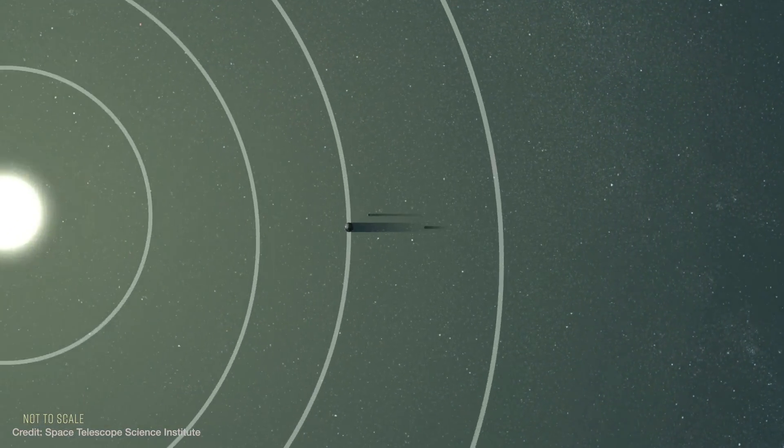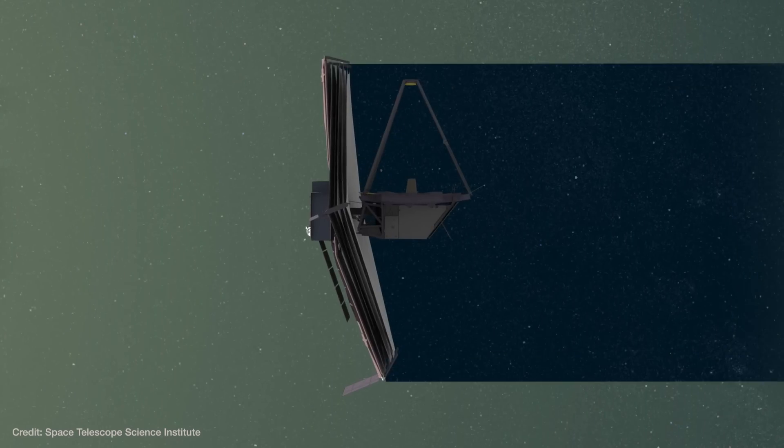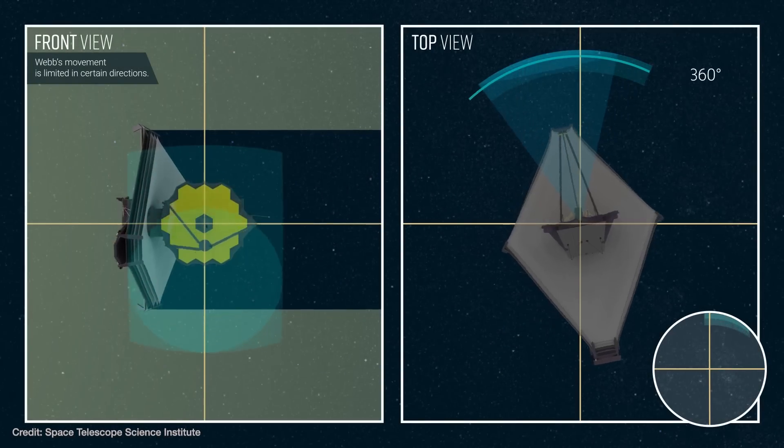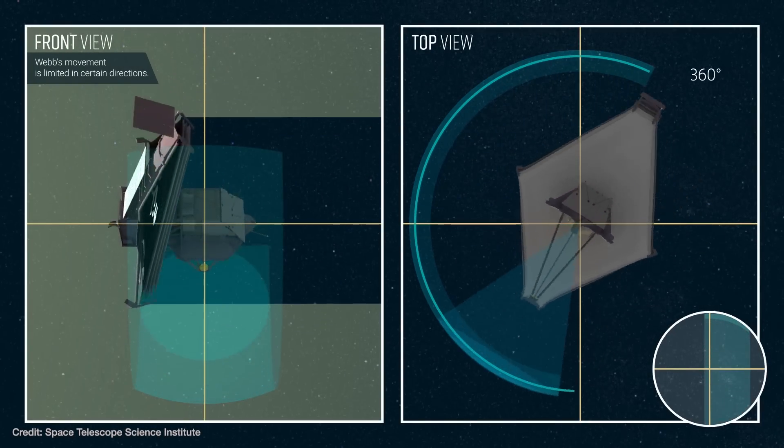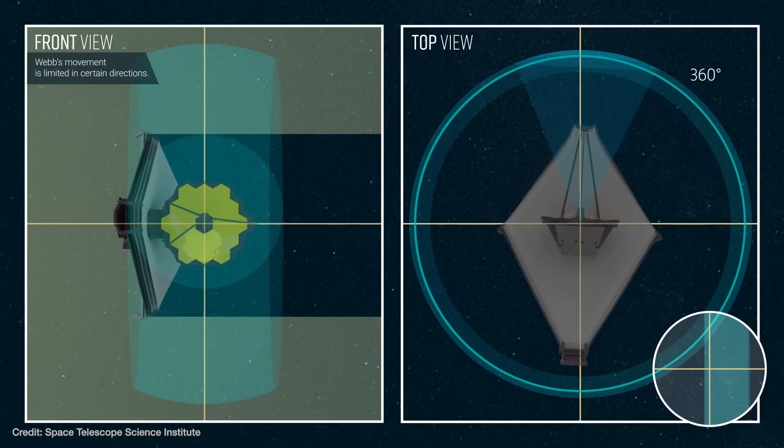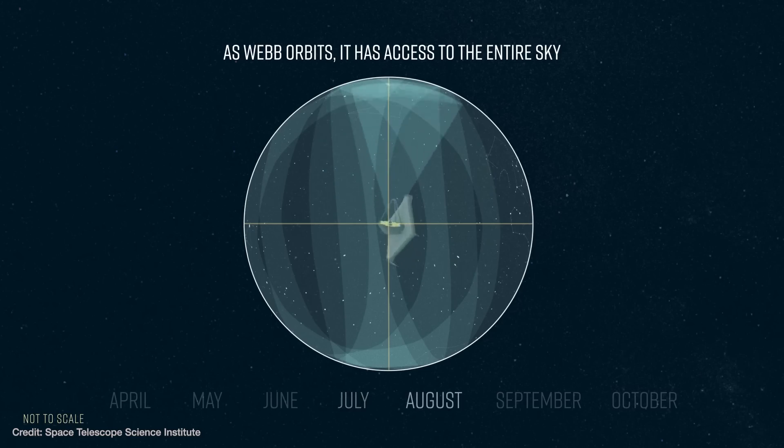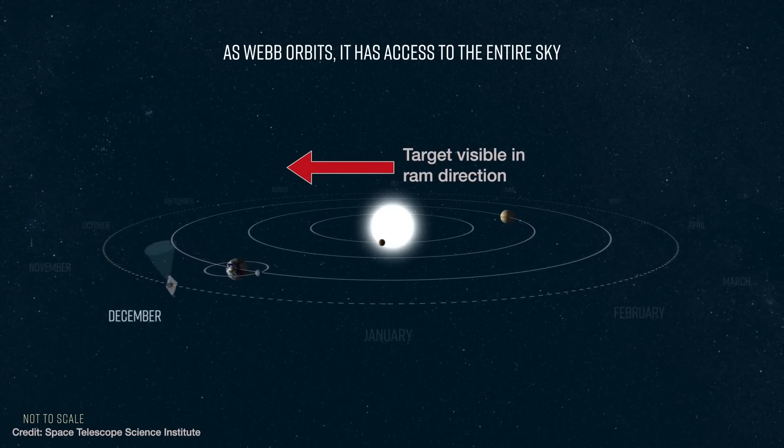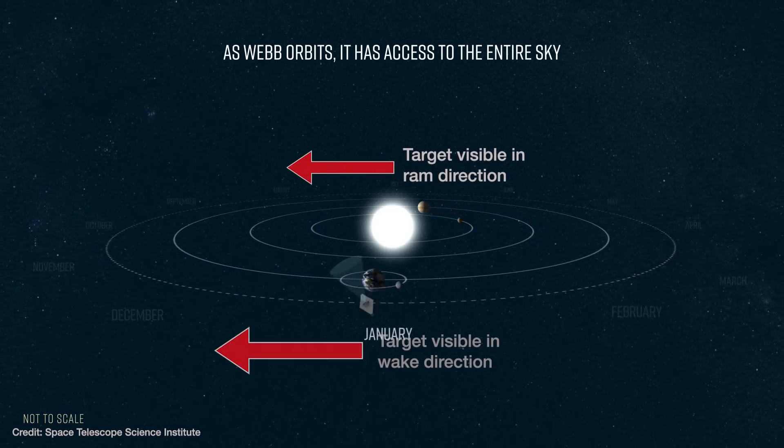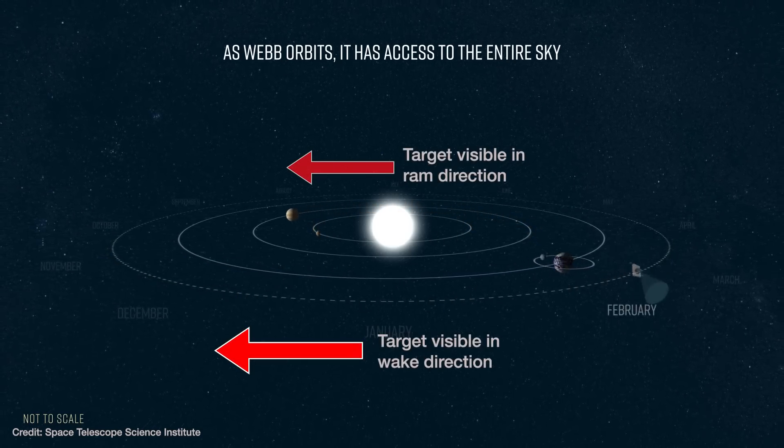Now, Webb is already constrained on where in the sky it can safely point to because it has to keep its shield facing the sun at all times. And this sets up a circular region called the field of regard. As Webb orbits the sun, different parts of the sky enter into this field. Now, over a six-month period, Webb will see everything in the entire sky. So, a fixed target in roughly the same plane as Webb's orbit enters the field of regard twice a year. Once as Webb is moving toward the target, and then again six months later as Webb is moving away.